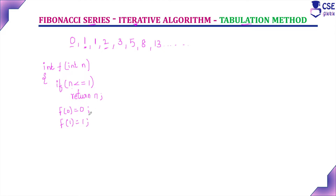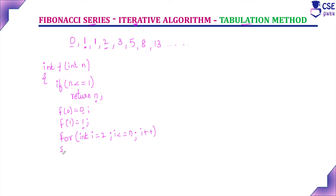Next, using a looping statement, we implement the logic. We use a for loop starting from i = 2, because for values 0 and 1 we return n itself. From i = 2 onwards, we implement the concept of adding the previous two terms. The loop runs while i is less than or equal to n — up to whatever n value the user has given.